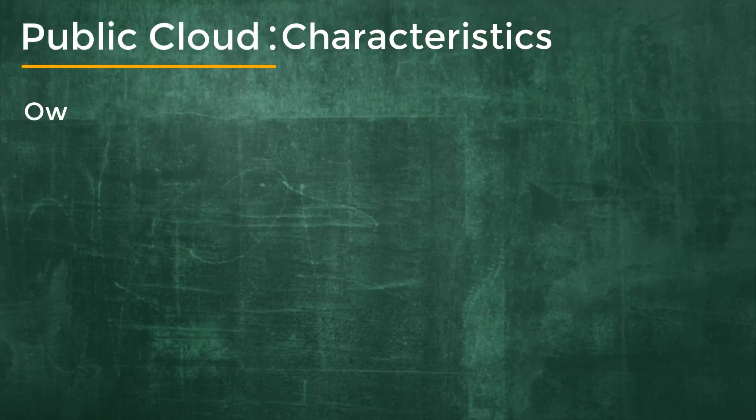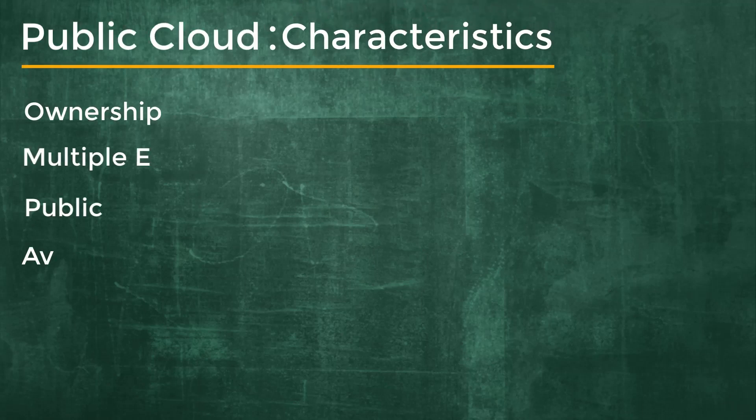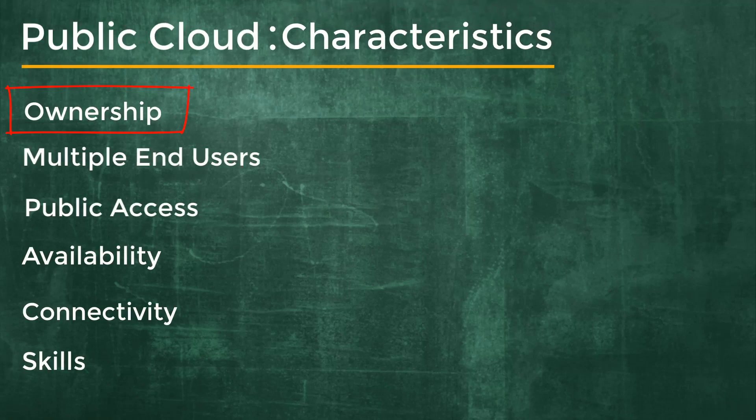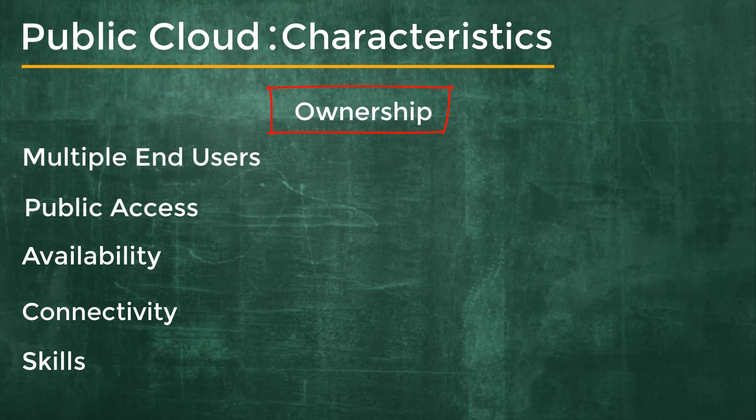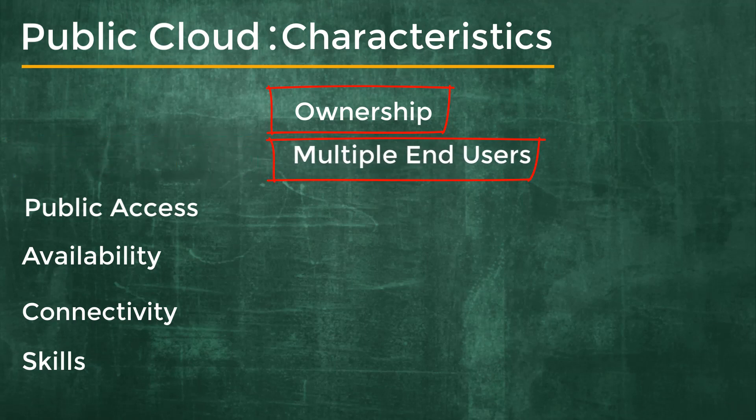Let's talk about the characteristics of public cloud ownership. These are the resources that the organization or end user uses — for example, storage, processing power, CPU, and memory. These resources do not belong to your organization; rather, they are owned and operated by third parties such as cloud service providers.